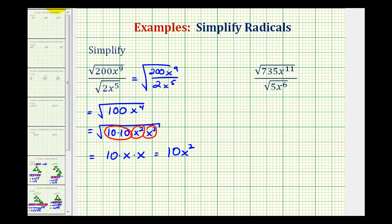So looking at the next example, we'll do the same thing. We'll start by writing this as the square root of 735x to the eleventh divided by 5x to the sixth. Well 735 divided by 5 is equal to 147.